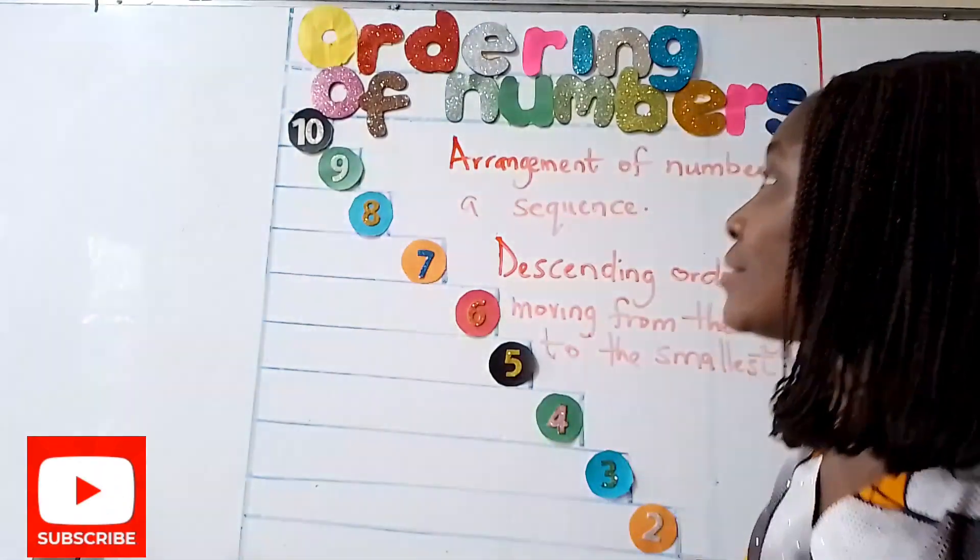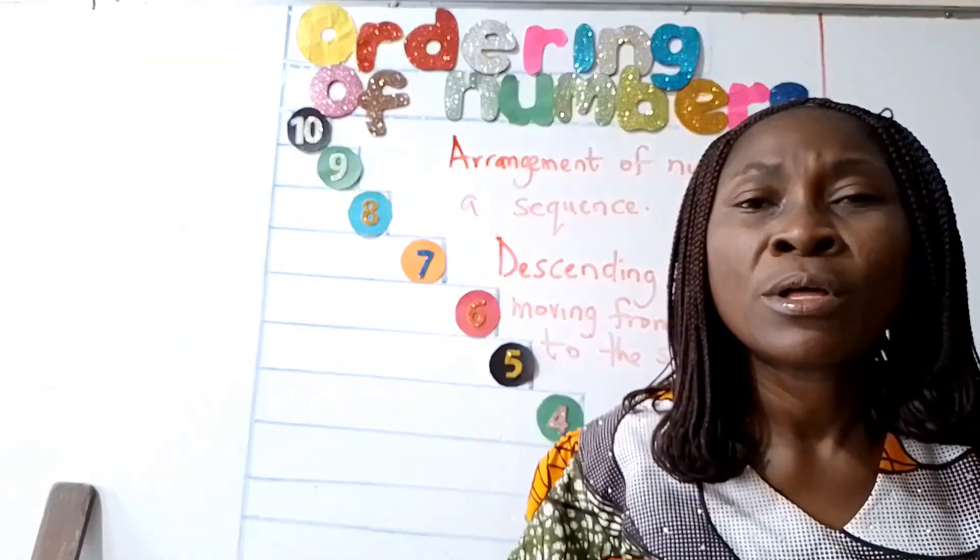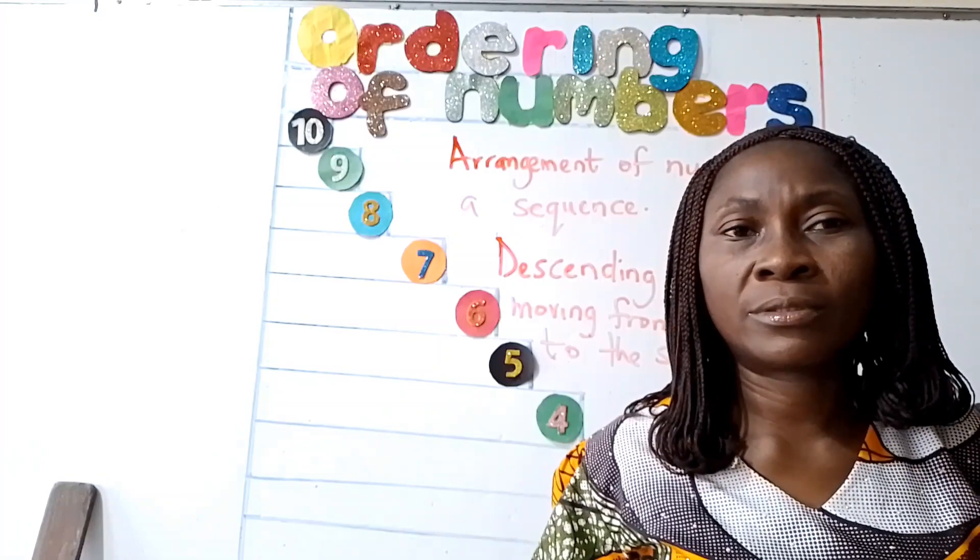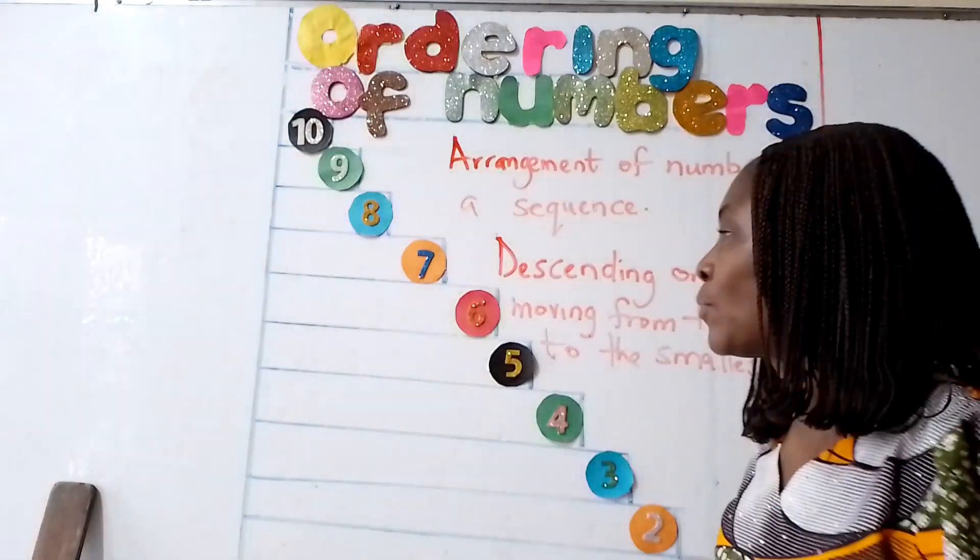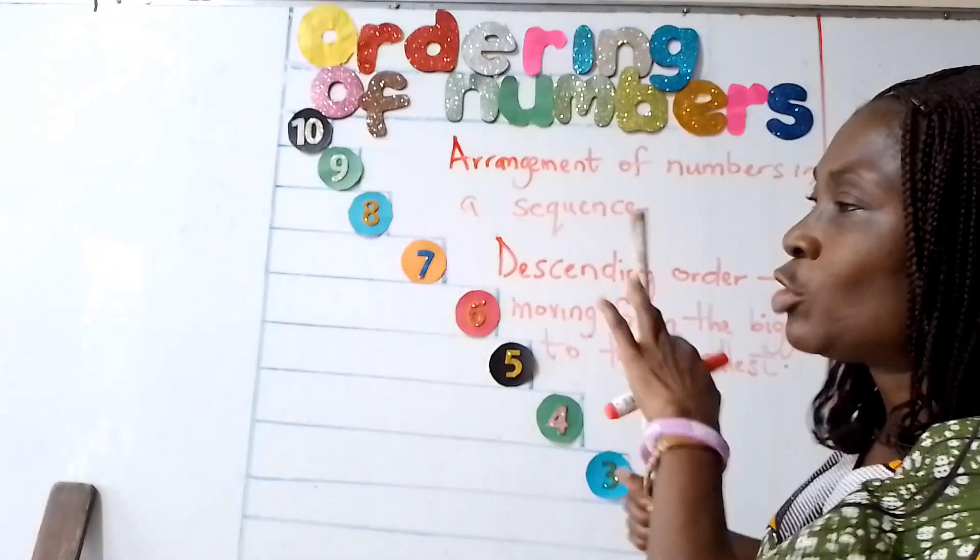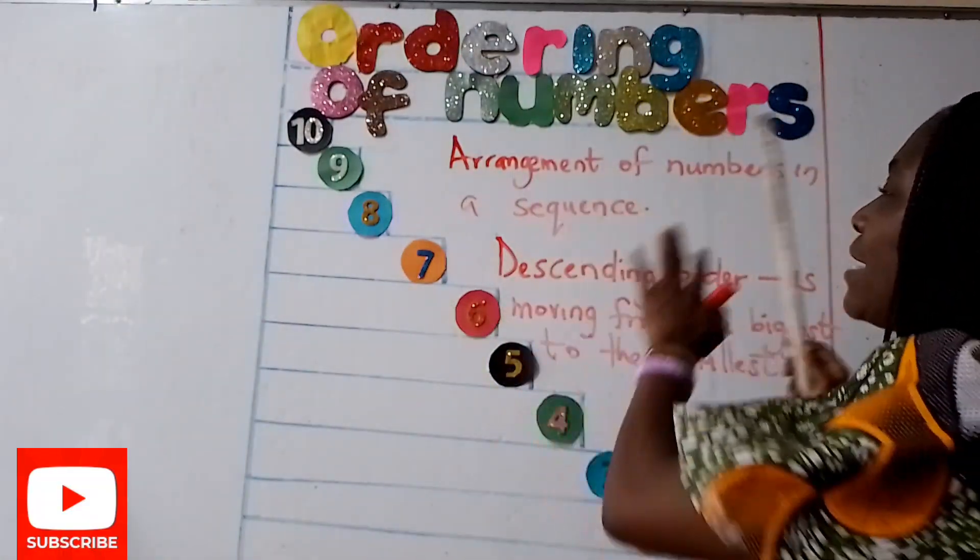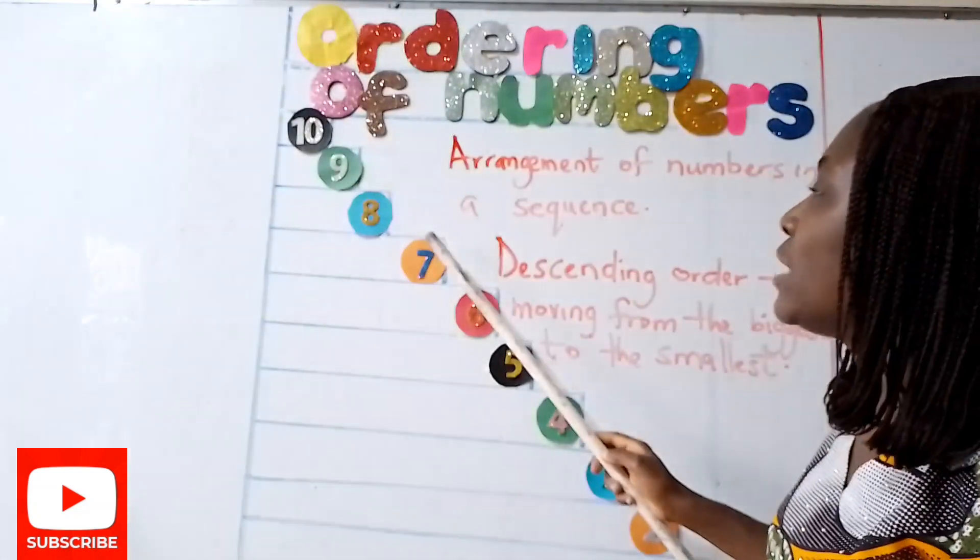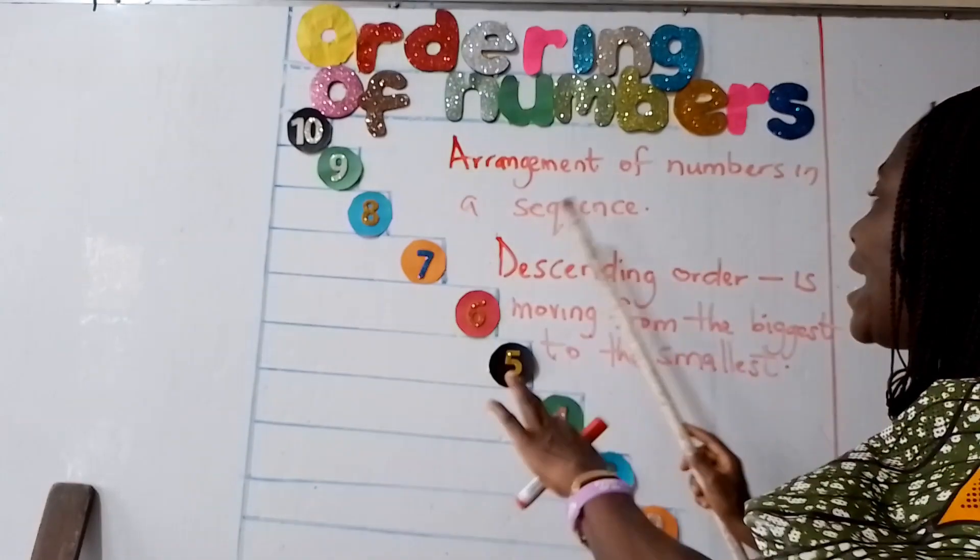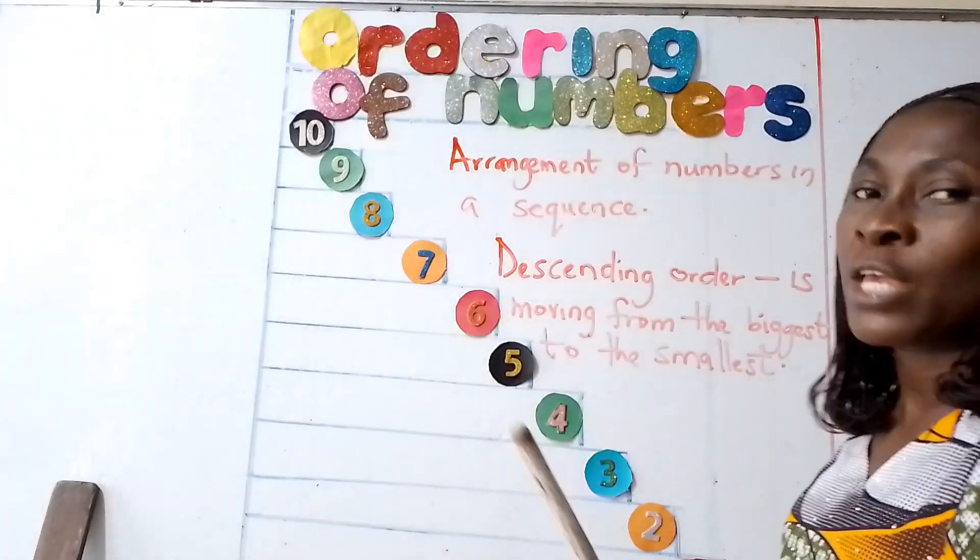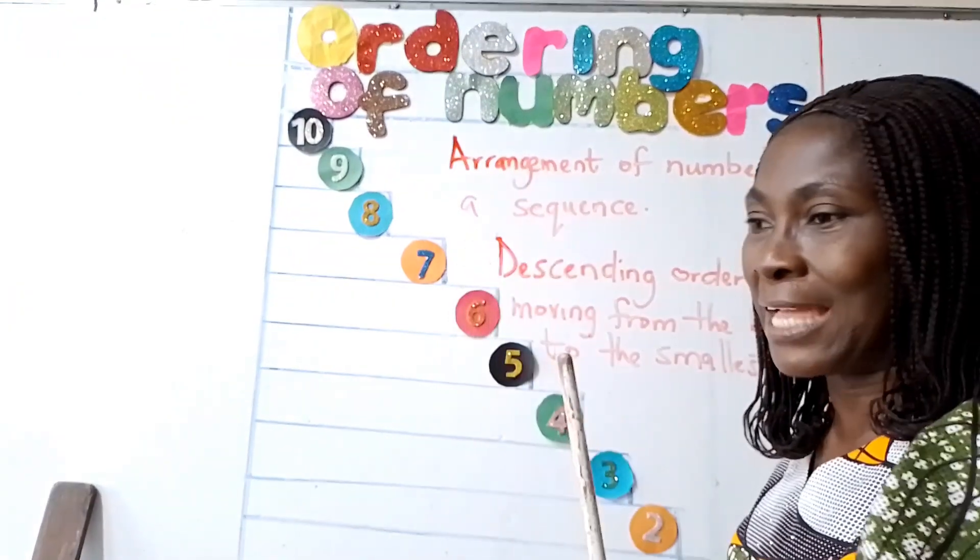The last time we learned ordering of numbers, we learned ascending order. Now let me remind you what we did last time. We said ordering of numbers is arrangement of numbers in a sequence. It could either be ascending or descending.